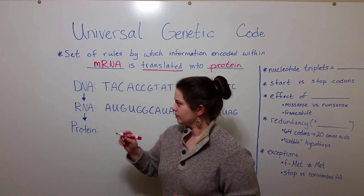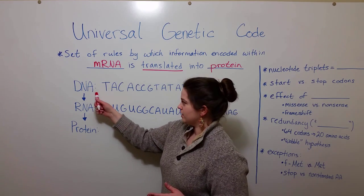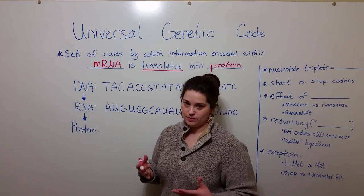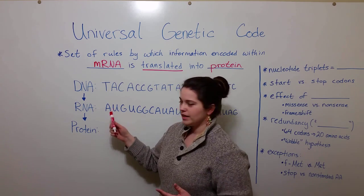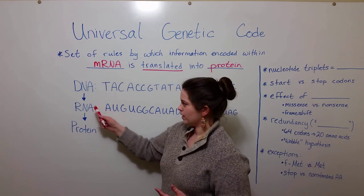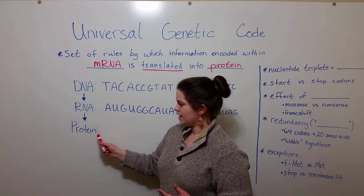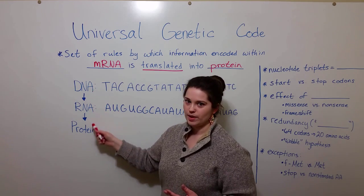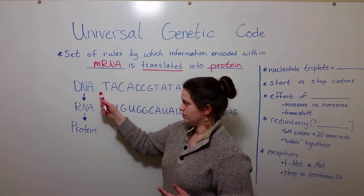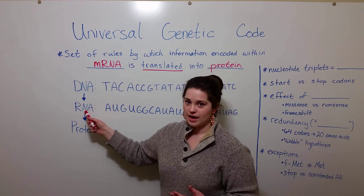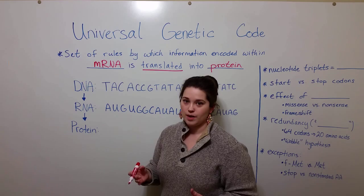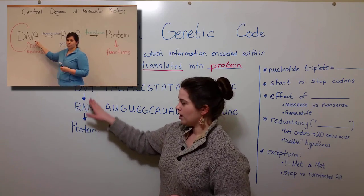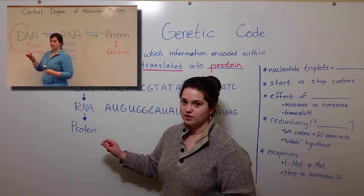Let's look at how it works. Cells have information that is stored within DNA — this is why DNA is the genetic material of cells. This genetic information gets transcribed into RNA, and then translated into protein. This movement of genetic information from DNA to protein through an RNA intermediate is known as the central dogma of molecular biology. If you're interested in learning more about the central dogma, see my video on that topic.